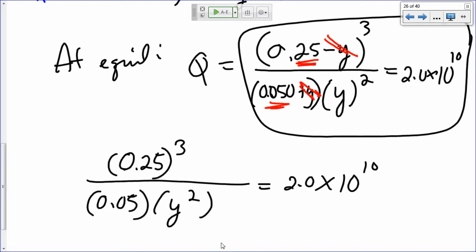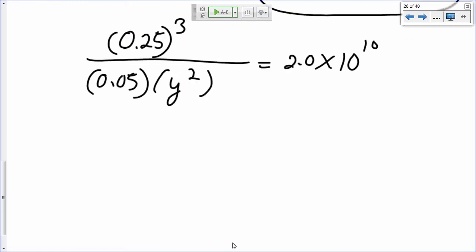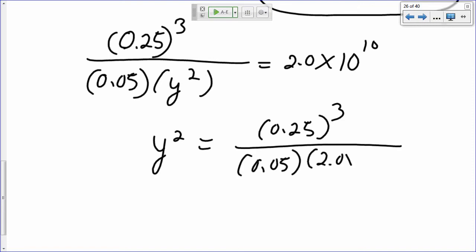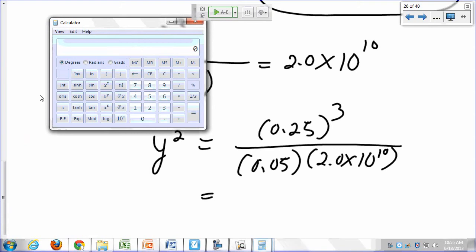How do I solve for Y? So Y squared equals 0.25 cubed over 0.05 times 2.0 times 10 to the 10. What would that be? 0.25 raised to the power of 3, divided by 0.05, divided by 2 times 10 to the 10.